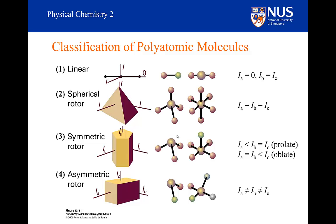Finally, we have what is known as an asymmetric rotor, where all three moments of inertia are different — I_A is smaller than I_B, which is smaller than I_C. This is the most complicated system to treat, and we will not be discussing it any further.